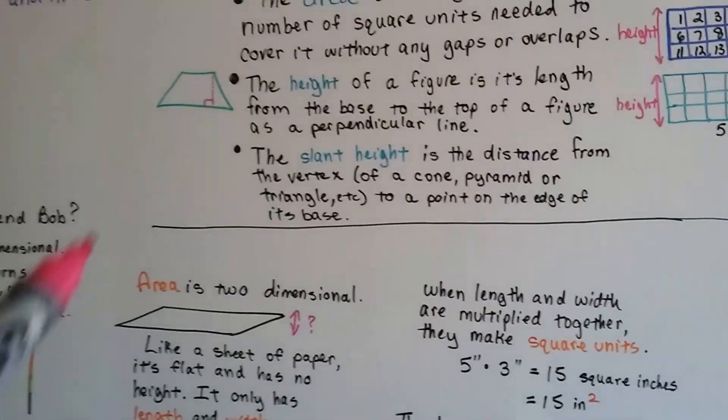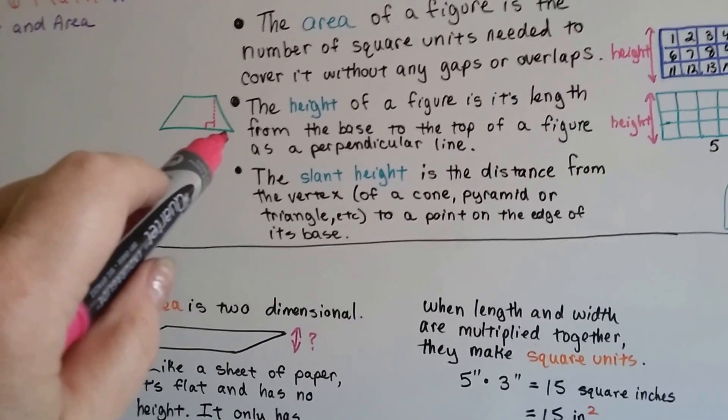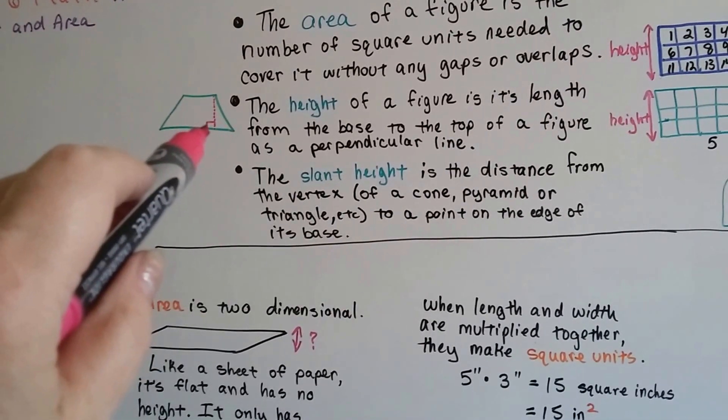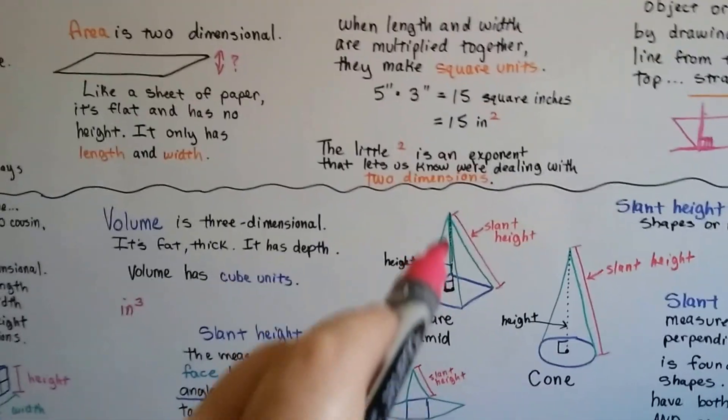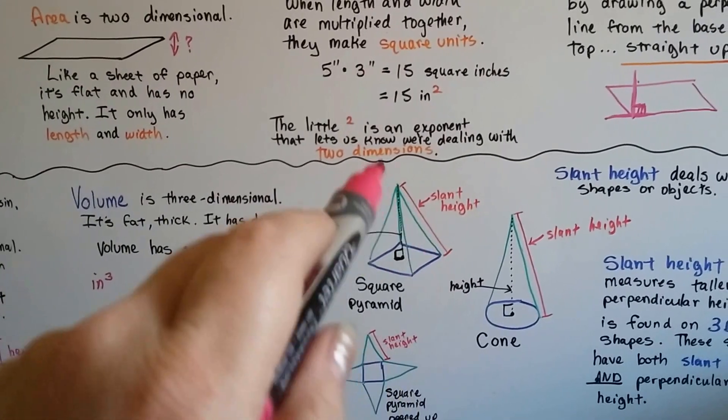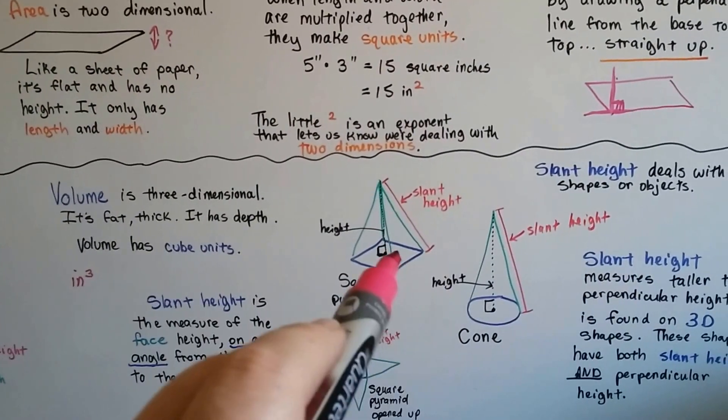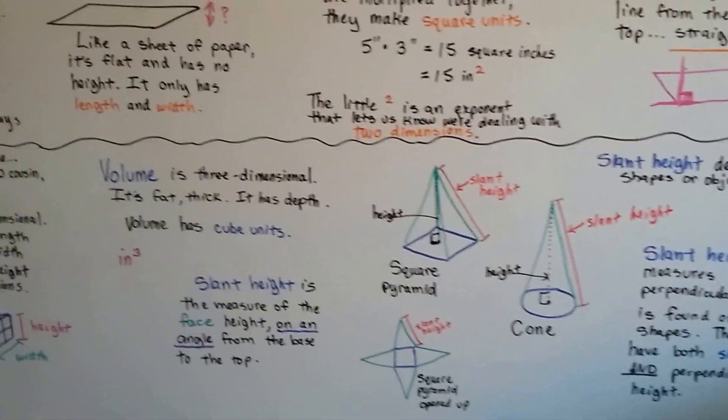With what we're doing with area, it goes perpendicular from the base straight up with a little 90 degree angle right there. Slant height is the height of the face on an angle of a 3D object like a square pyramid or a cone or a triangular pyramid.